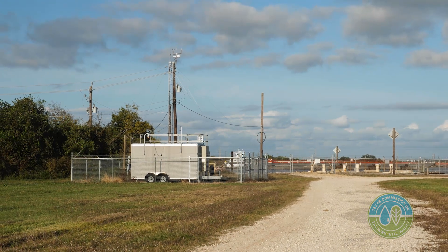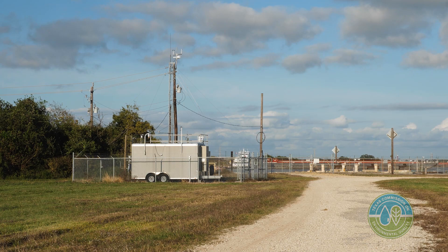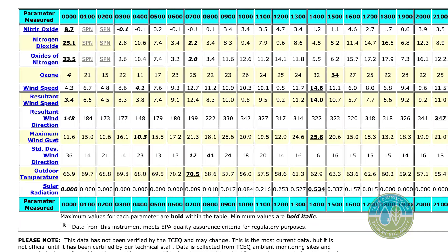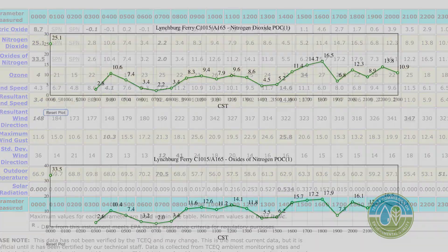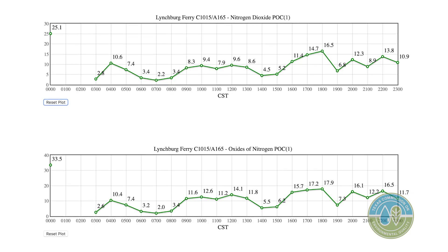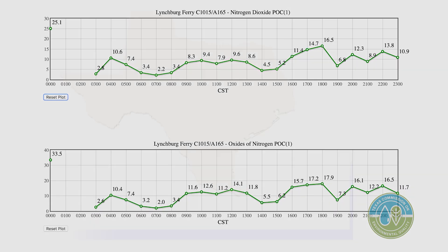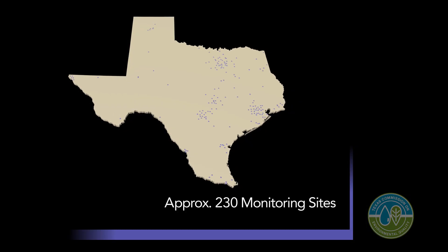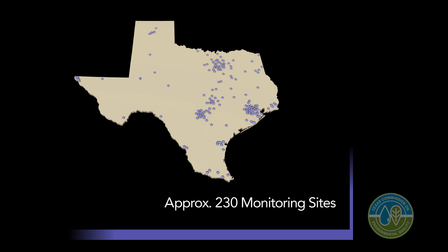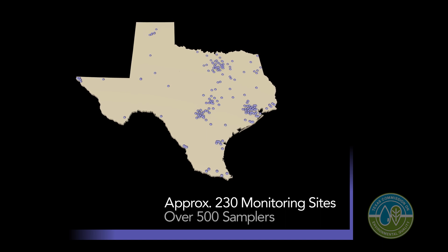Air monitoring stations are used to collect air quality data. The agency uses this data to make decisions to help protect the public health and environment. The State of Texas Air Monitoring Network is approximately 230 sites across the state with over 500 individual pollution samplers.